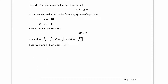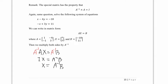Going back to our system, we have it in matrix form as AX equals B, where A is [1, -4, -1, 3]. We multiply both sides by A inverse. A inverse times A gives I, and I times X just gives X. On the right side, we get A inverse times B, which we can calculate.